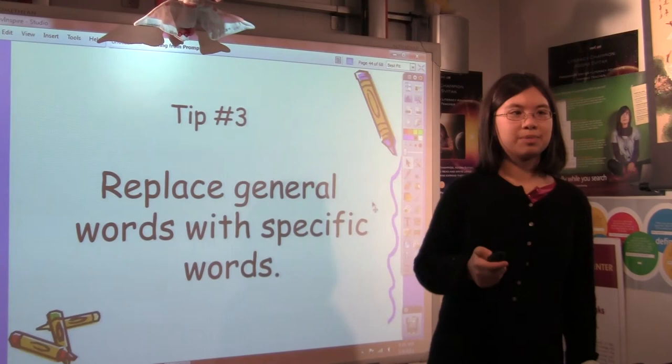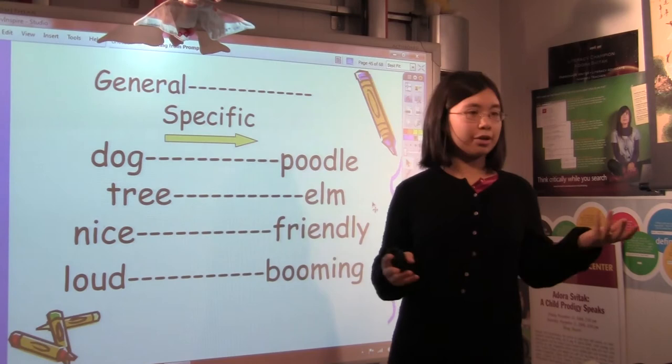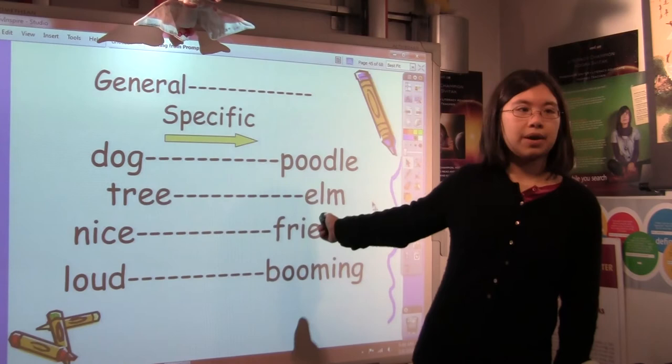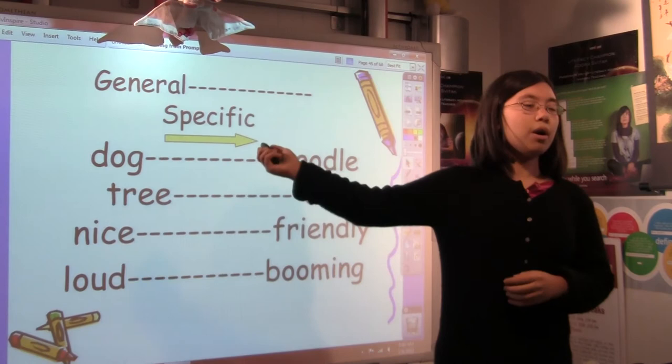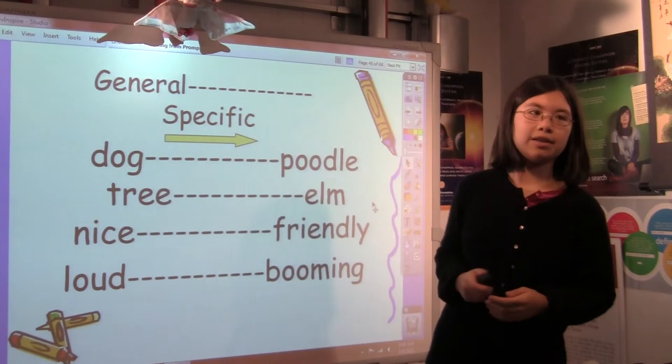And wouldn't it be such a shame if you really did have a moldy pizza and you didn't describe it and you just used stuff and then no one would know. So you replace general words with specific words. Even with something like dog, you might think, well, dog is pretty specific. It's better than saying animal or pet. That's true. But you can say poodle. Tree, you could specify the kind of tree. Nice, we've talked about nice. That's a really general word. You could say friendly. Loud, booming. You know, you might specify how does it make you feel? Is it kind of booming in your ears?